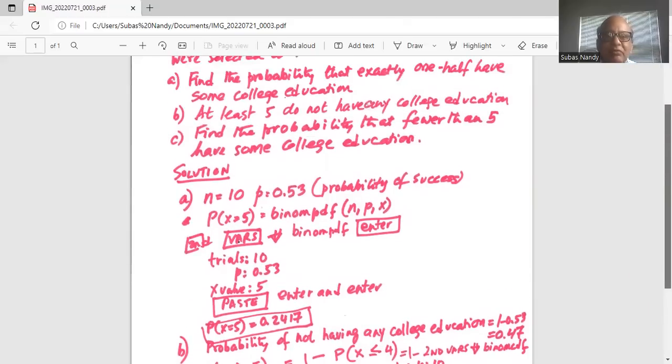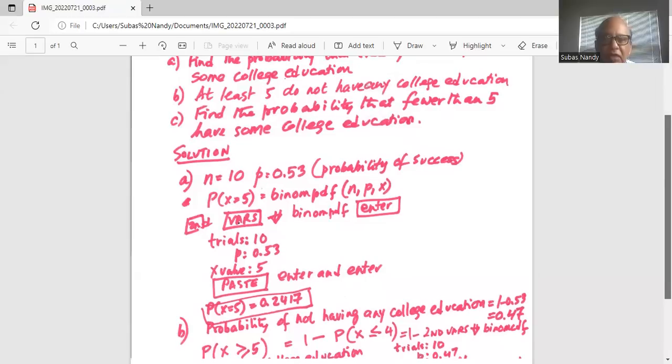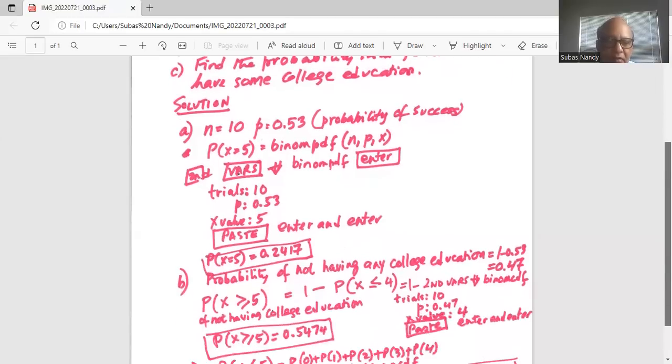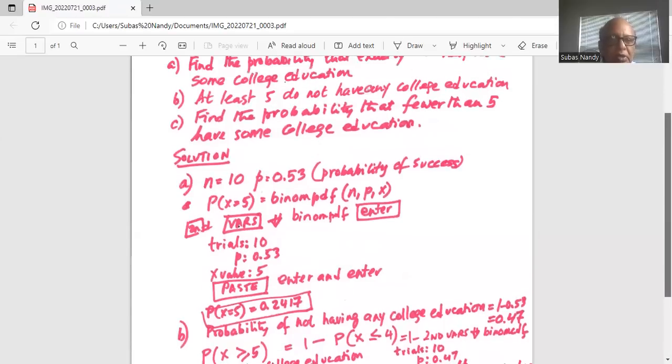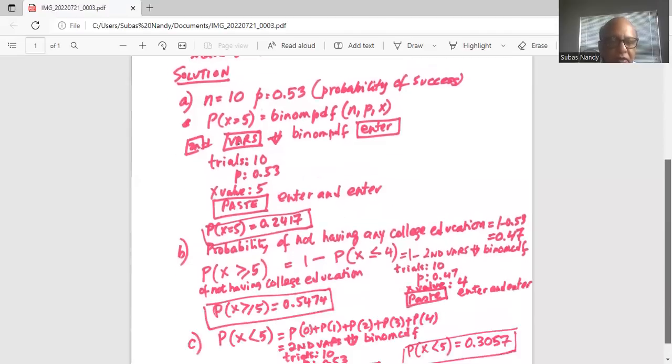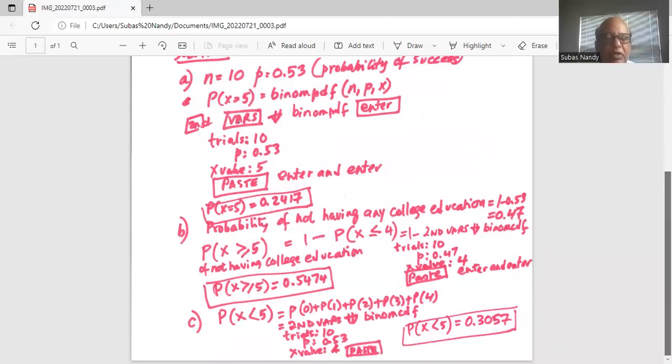Part C: find the probability that fewer than five. Fewer than five means zero, probability of zero, plus probability of one,